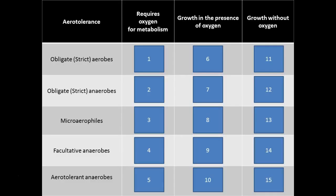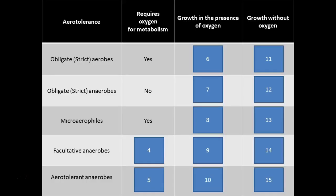Let's summarize in a table. Does it require oxygen for metabolism? Can it grow in the presence of oxygen? Can it grow without oxygen? Strict or obligate aerobes require oxygen — they'll die without it. Obligate anaerobes don't require it. Microaerophiles need it, but in small amounts. Facultative anaerobes don't have to have it, but they can use it. Aerotolerant anaerobes don't require it. Whenever we see anaerobes in the name, it's always no oxygen requirement.